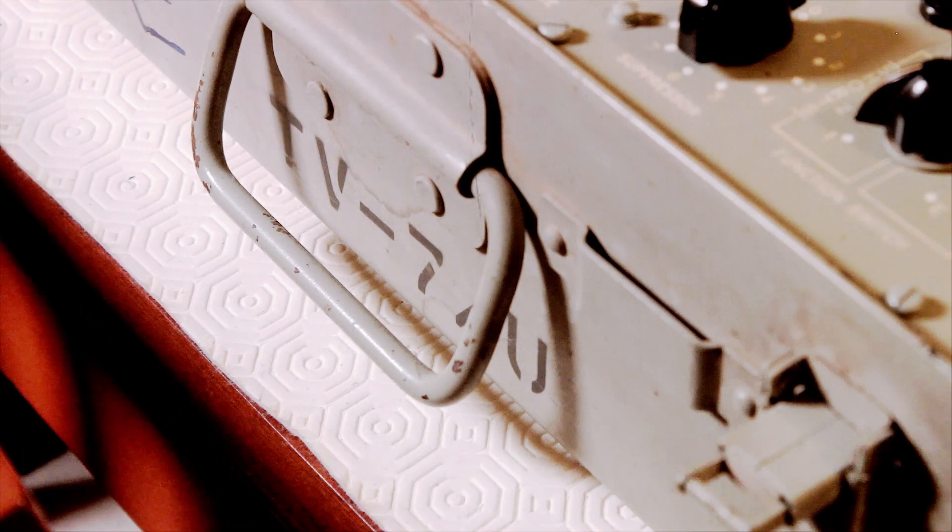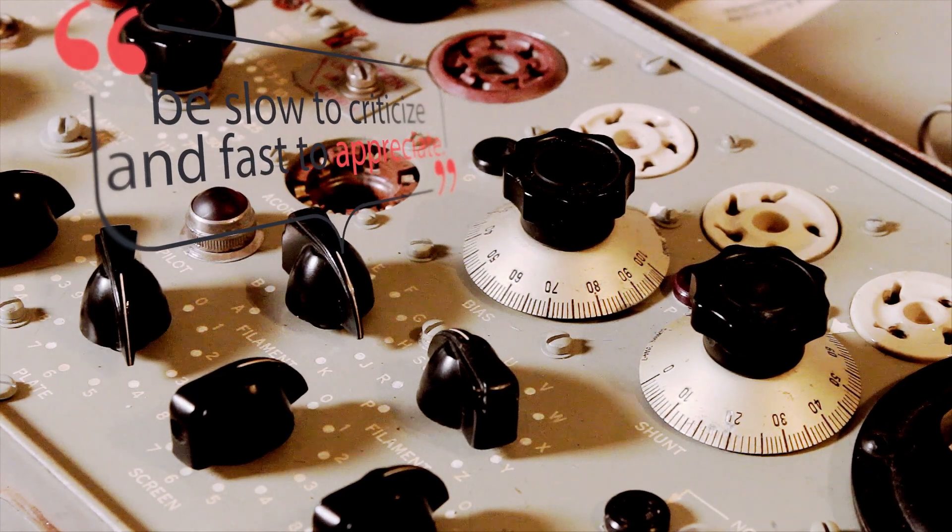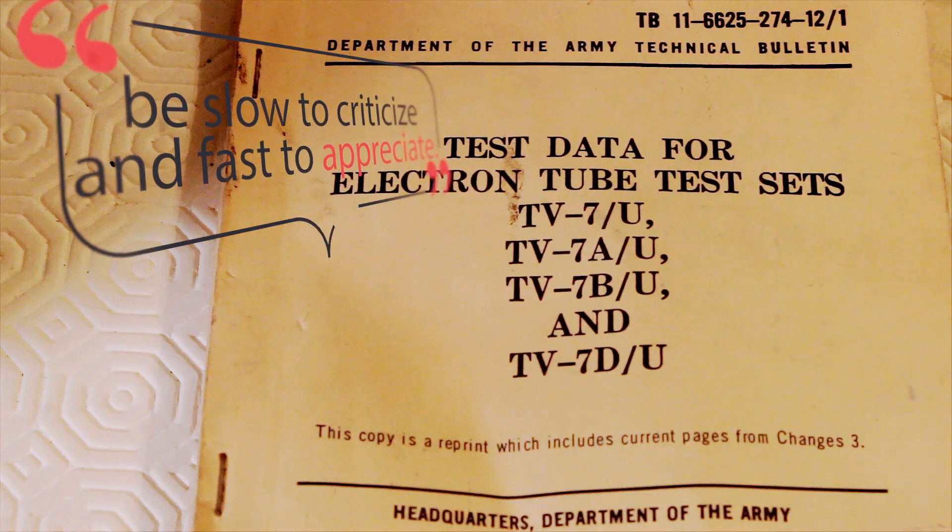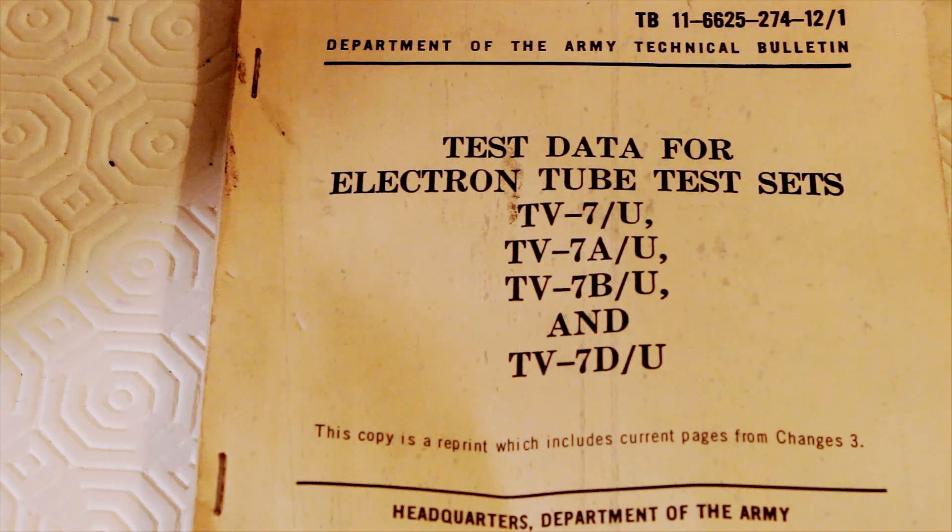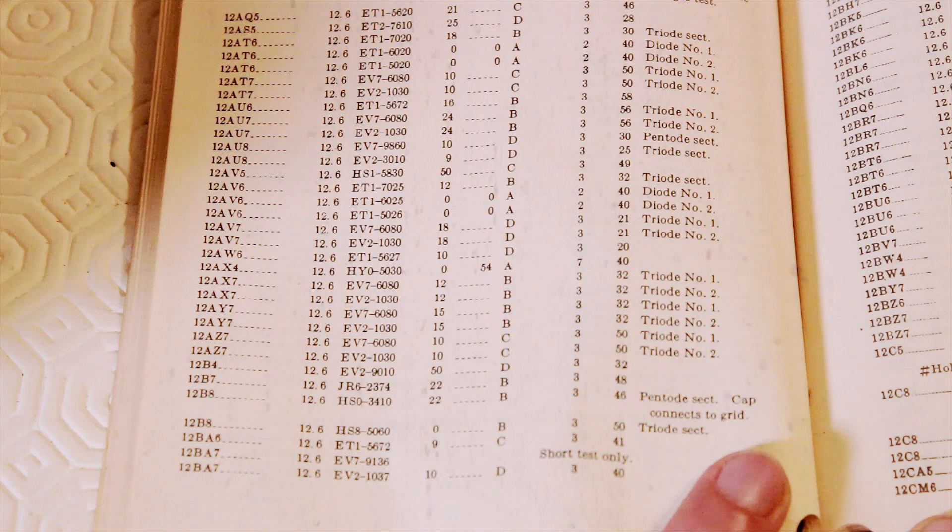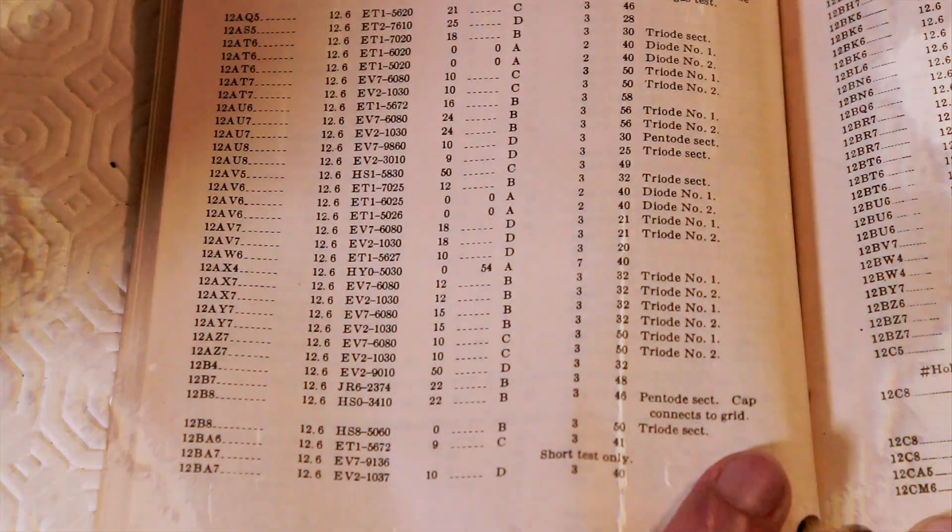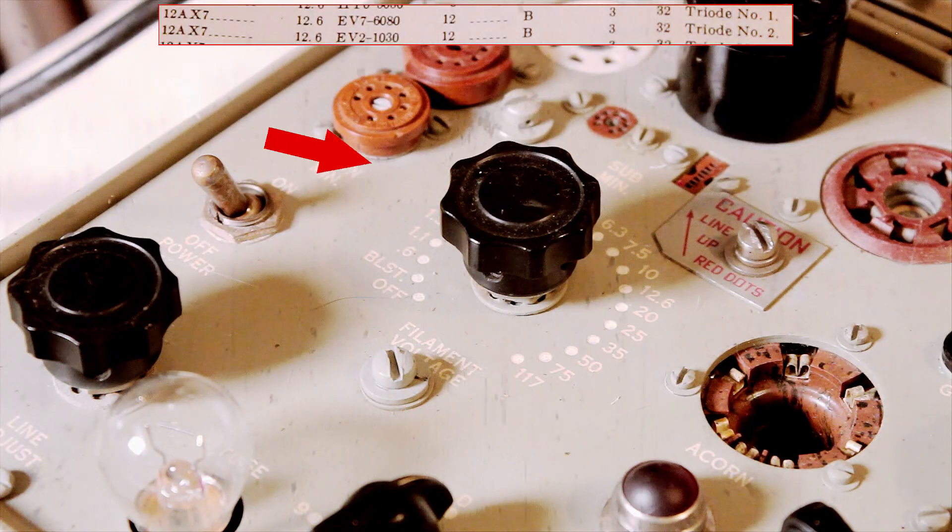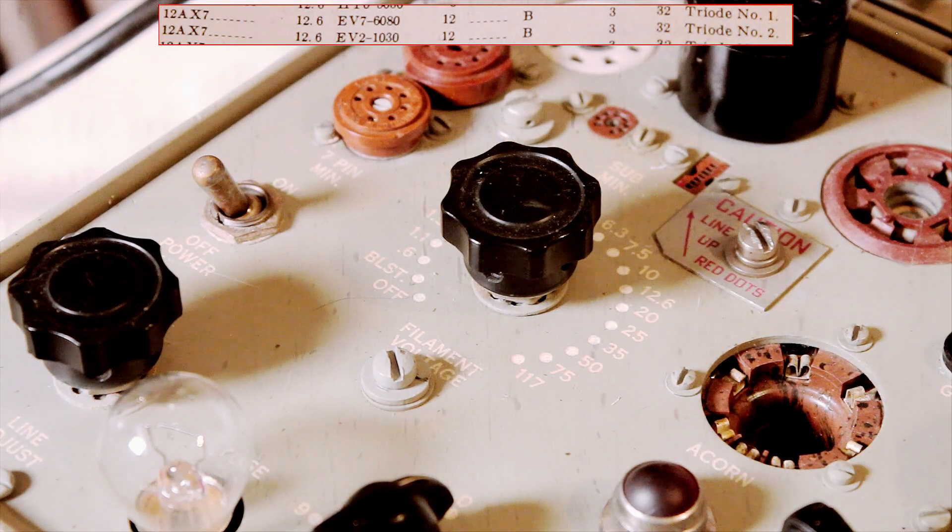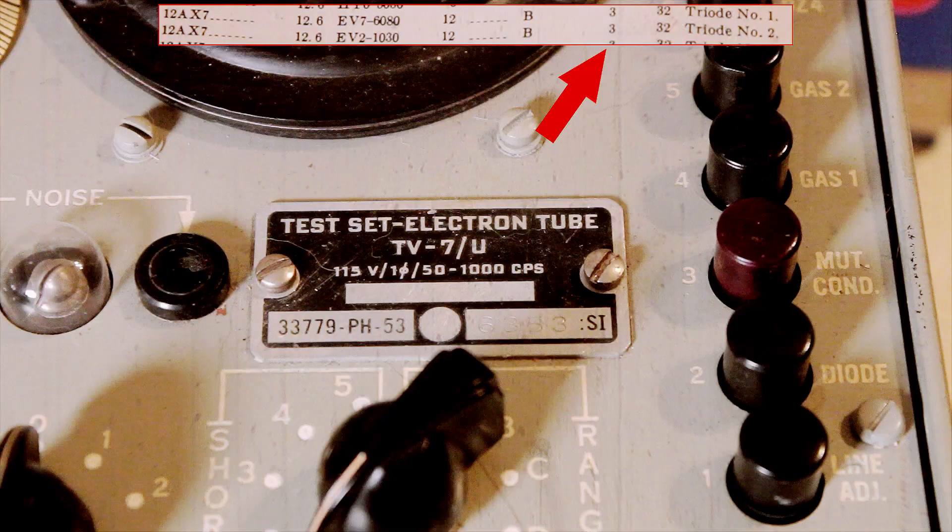Okay, I'm using my TV7 military tube tester. It's an old machine for this old technology. Today I start testing 12AX7 tubes. It's a dual triode, like having two tubes in one, so I have to test both sections independently.